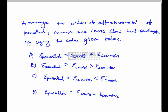The order of effectiveness of parallel, counter, and cross flow heat exchangers is asked using the codes given below. Here ε represents effectiveness, with suffixes denoting parallel flow, counter flow, and cross flow heat exchangers respectively.